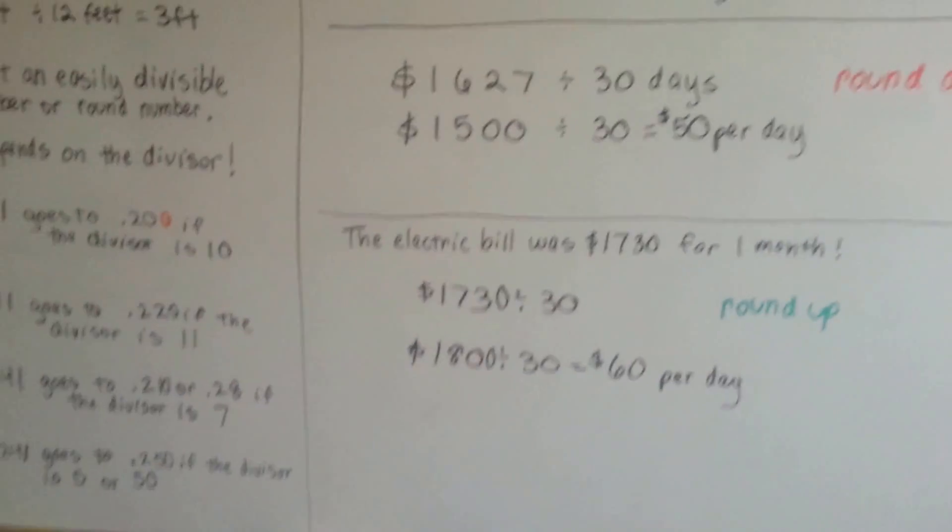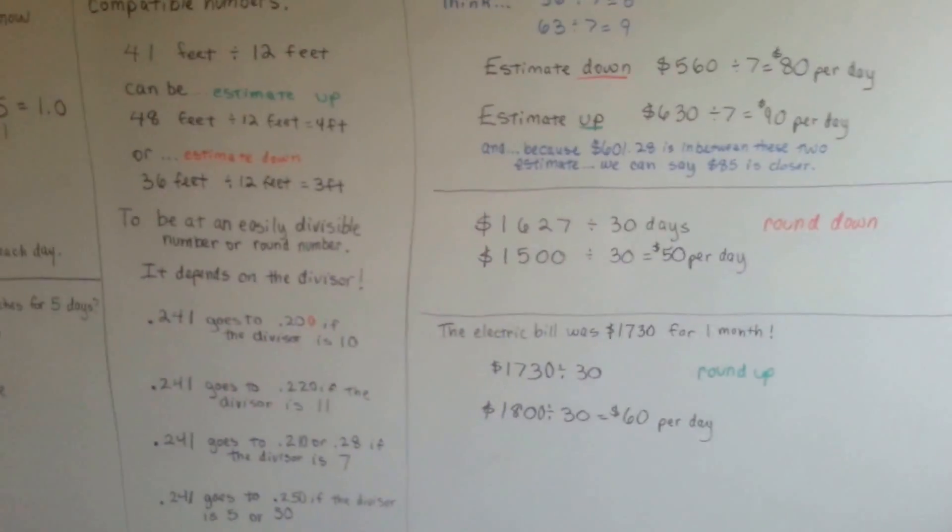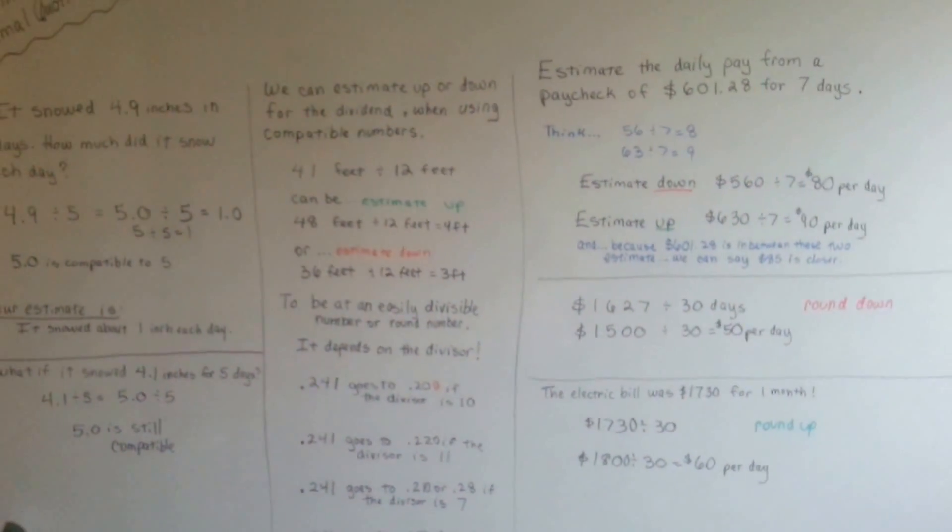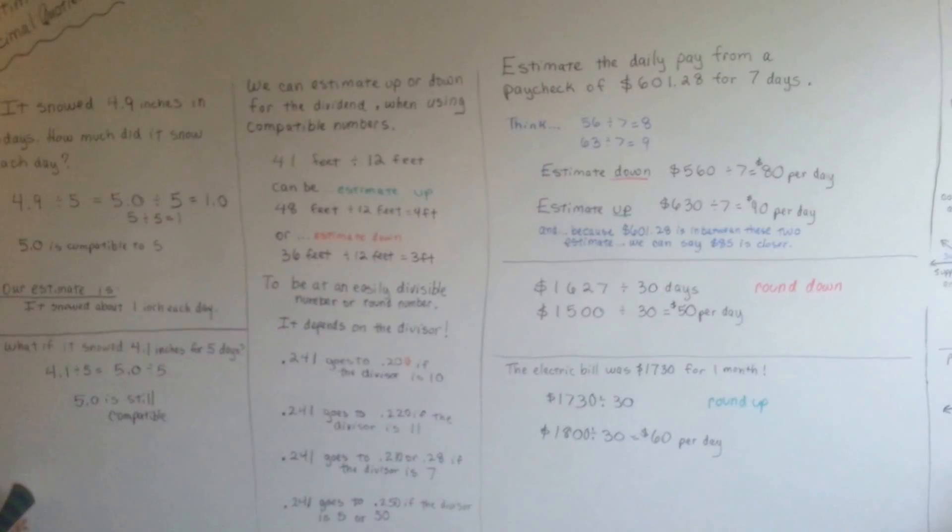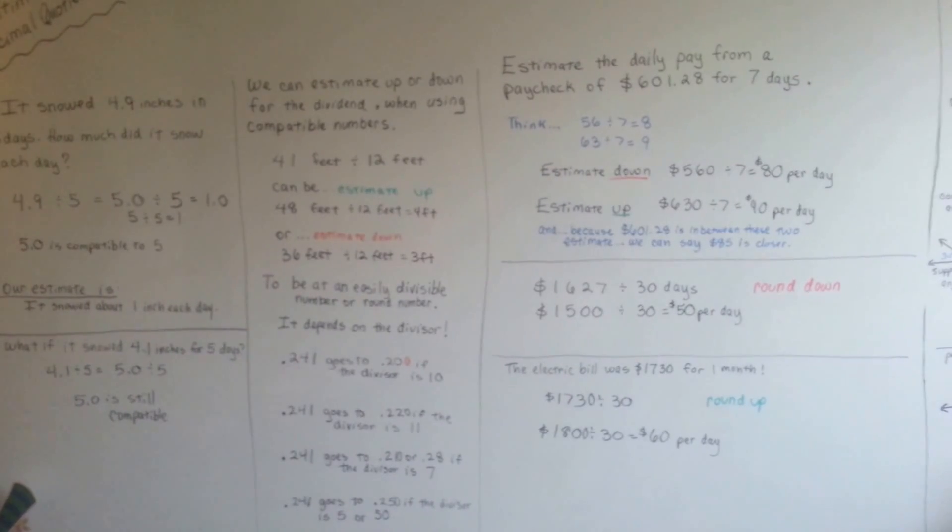So you can round up or round down. Whatever is compatible to the divisor is how you would decide which one to use. Alright? Does that help you with estimating? I hope so. I'll see you next video. Bye.